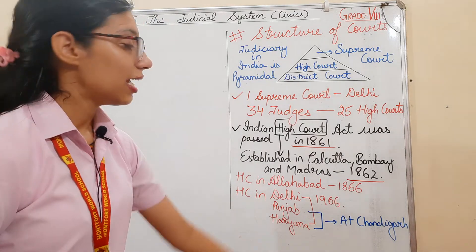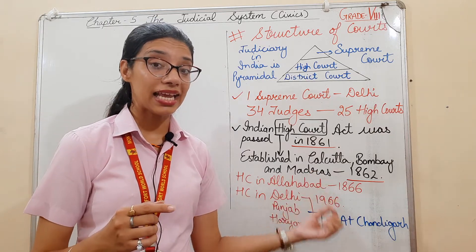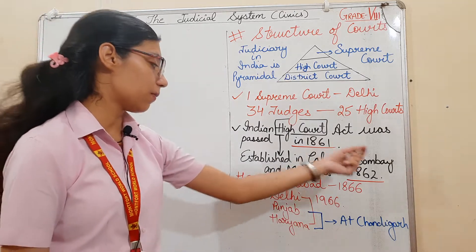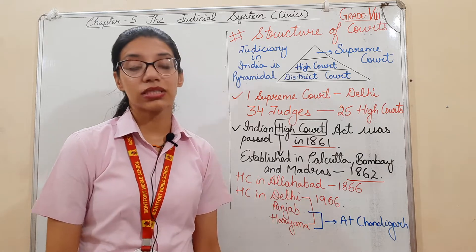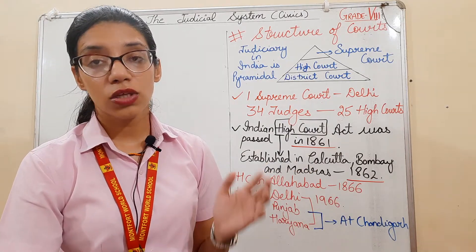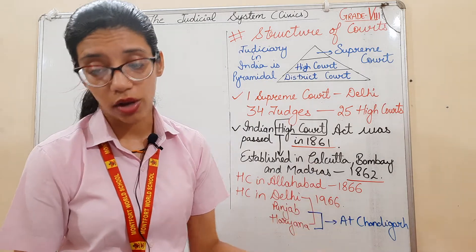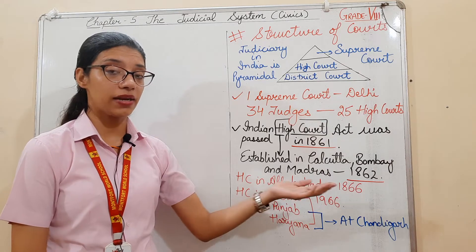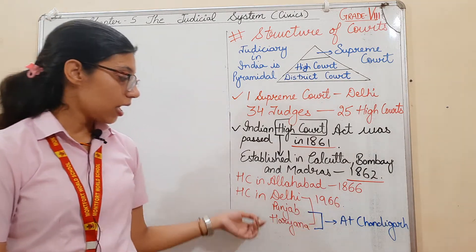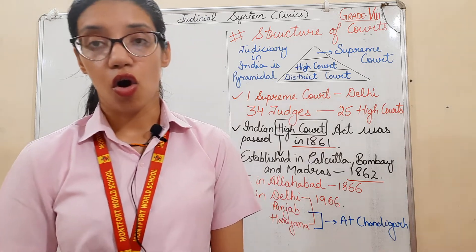The High Court Act was passed in 1861, and the High Courts were first established in Calcutta, Bombay, and Madras in 1862. The High Court in Allahabad was established in 1866 with territorial jurisdiction over UP, and it has a bench at Lucknow. The High Courts in Delhi, Punjab and Haryana were established in 1966. The Punjab and Haryana High Court is located at Chandigarh.